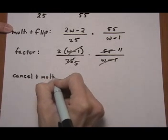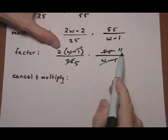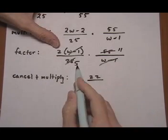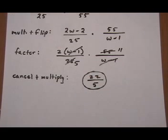And if I cancel and multiply across, I get 2 times 11, 22, over 5 times 1 or over 5. So the answer there is 22 over 5.